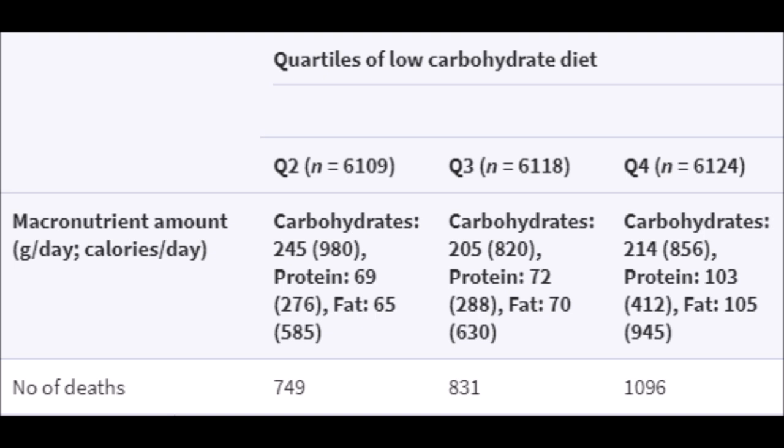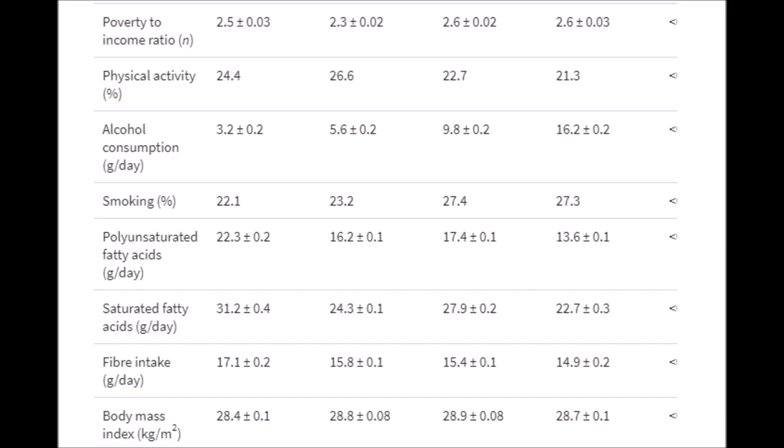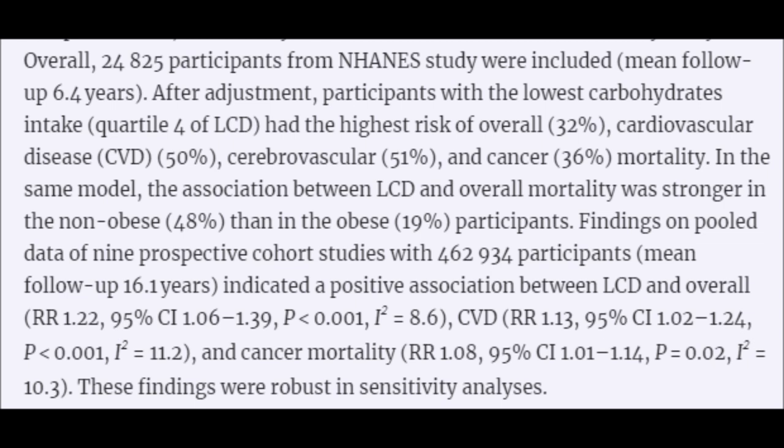We can see that the carbohydrate dose response isn't there. Quartile 3 has the lowest carbohydrate score, so it's not really accurately measuring what it's meant to measure. Another interesting thing is that quartile 4 has the lowest saturated fat, while the high low-carb score has higher saturated fat. Apart from that, other biases stagger as we'd expect: less physical activity with a lower carb score, higher alcohol consumption, higher smoking, and so forth. These things are meant to be adjusted for — but we'll see if they are.